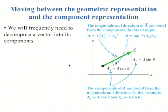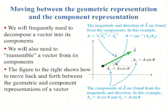You should be able to move between the geometric representation, so magnitude and direction, and the component representation of any vector. Here we have: if you know a sub x and a sub y, you can find the magnitude by using Pythagoras, and you can find the direction by looking at the trigonometry of this right triangle. Here's the angle theta: tangent is a sub y over a sub x, so this angle theta is the inverse tangent of a sub y over a sub x.